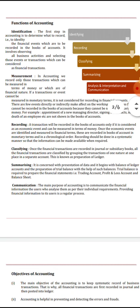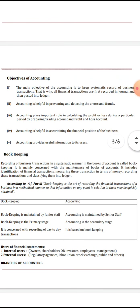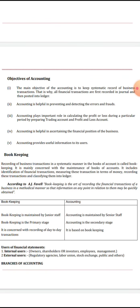In the final exam they may ask you to explain these terms. Next is the objective of accounting. The main objectives are: to keep a systematic record of business transactions; accounting helps in preventing errors and frauds; it plays an important role in calculating profit and loss during the period; it helps in assessing the financial position of a company or business; and it provides useful information to its users.